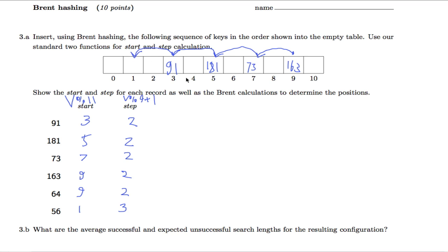That would be the standard double hashing, but we're considering Brent, so we want to see if we can move something out of the way. Unfortunately, that doesn't work too well. All of the previous ones have step 2, so if you want to move 163 out of the way, you have to move it essentially to the same spot here. And 73, you have to move it 1, 2, 3 steps to the same place, and 181 2 steps, and 91 1 step.